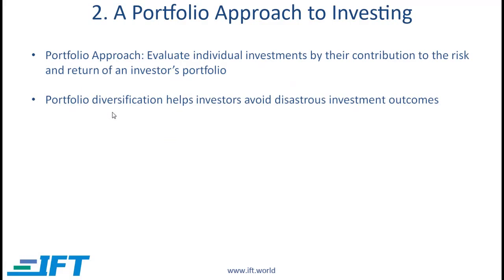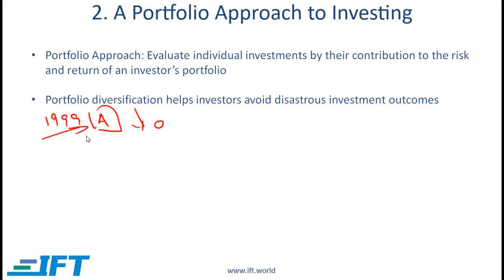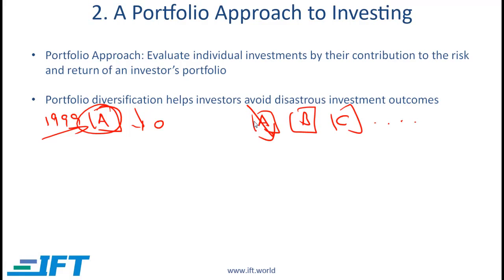Portfolio diversification helps investors avoid disastrous investment outcomes. For example, consider an investor holding Enron stock in 1999. By the end of 2001 or early 2002, Enron stock had essentially gone down to zero. If the investor's entire net worth was tied up in this one stock, that is a disastrous outcome. On the other hand, if the investor was diversified and held several other stocks in addition to Enron, then the fact that one stock goes to zero has a relatively small impact on the overall portfolio.